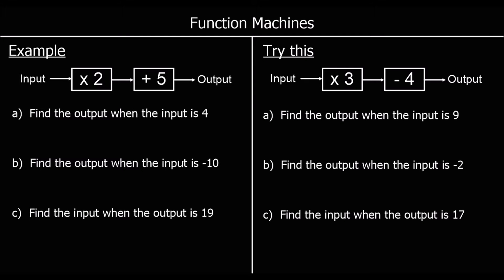Here we have a function machine. In a function machine you put in a number which is called the input, and then it goes through the processes in the machine and the number out is called the output. So in this function machine we put a number in, multiply it by 2 and then plus 5, and then we get the output out.